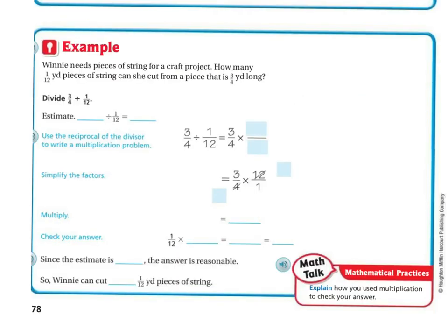So in this next example, Winnie needs a piece of string for a craft project. How many one twelfth yard pieces of string can she cut from a piece that is three quarters inch long? So if you want to get an idea where you're at, estimating always tends to work. So we have three quarters, which is closer to one. And then we have divided by one twelfth, which when you divide that, you're going to get 12.